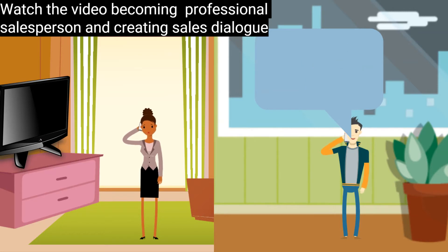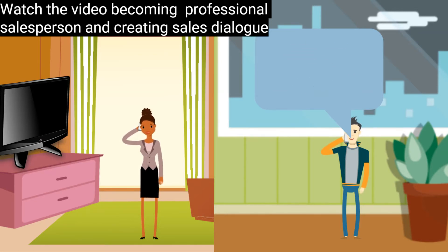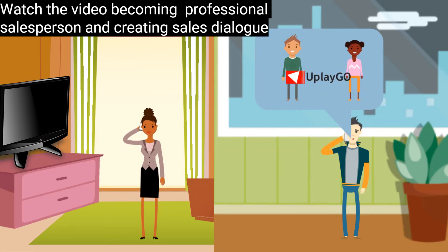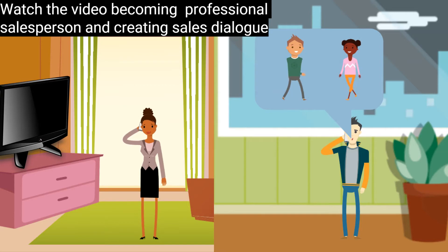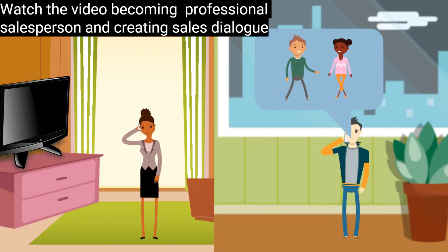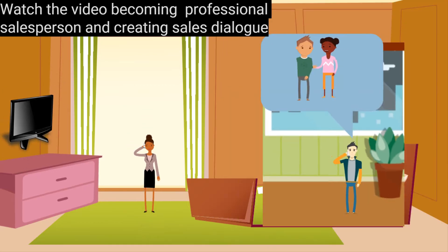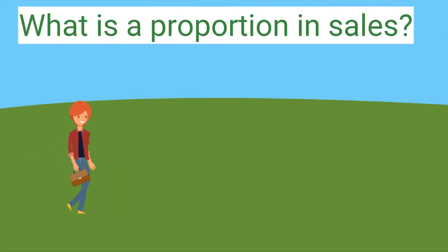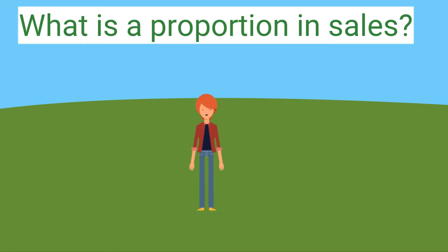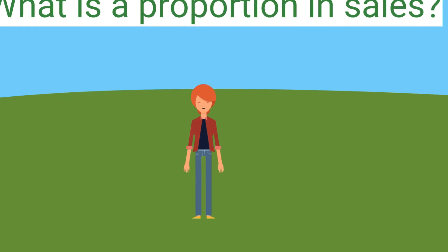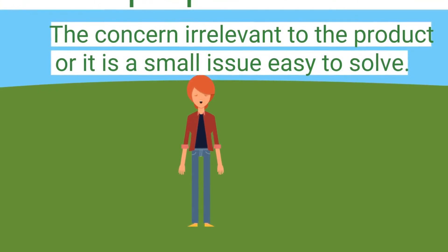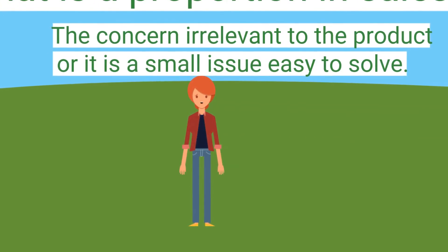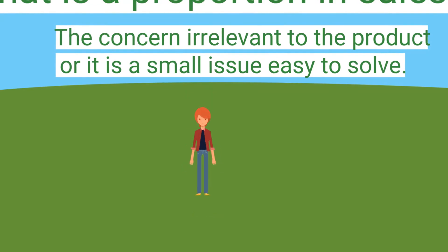Raymond just needed to get them back to proportion. Natalie just needed to ask permission, or write a note to Larry if he wasn't there, that she had taken his game. Afterwards she needed to return it to him — it was solved quickly. In that scene, we spoke about proportion: when the customer raises a concern, you tell him that it is irrelevant to the product or that it is a small issue that is easy to solve.